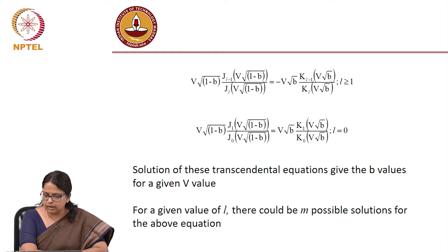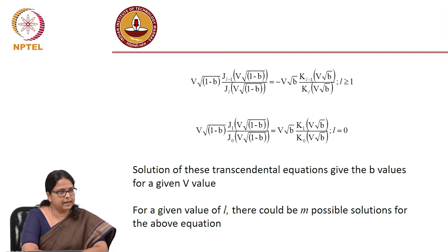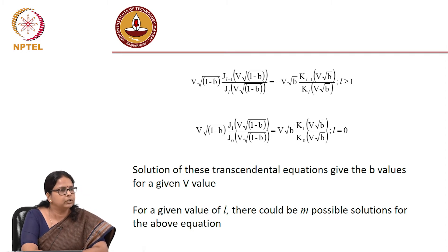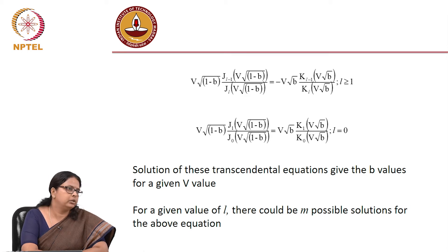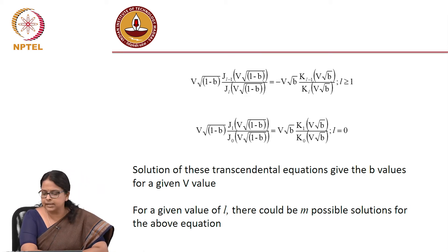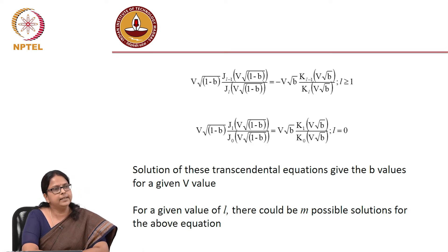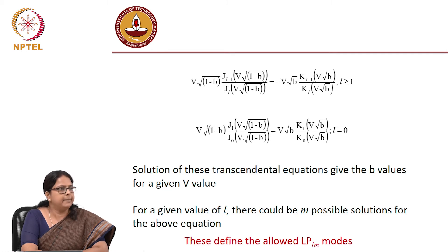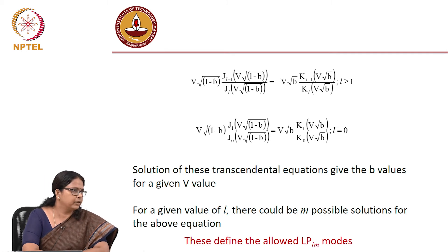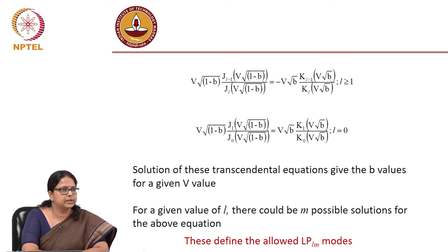For a given L — L is the constant corresponding to the azimuthal equation — you could have L as 0, 1, 2, 3, etcetera. For each L these transcendental equations can give you M possible solutions. So that leads us to what is called LP_LM modes. For every L you can have M solutions, which leads to LP_LM modes.